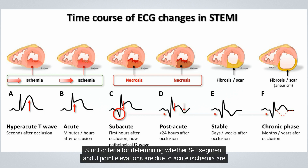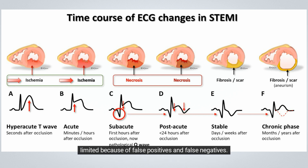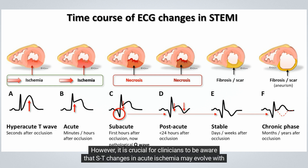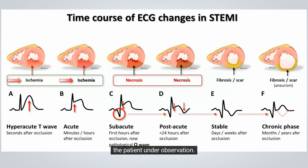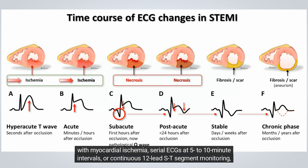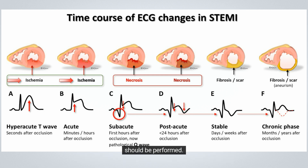Strict criteria for determining whether ST-segment and J-point elevations are due to acute ischemia are limited because of false positives and false negatives. However, it is crucial for clinicians to be aware that ST changes in acute ischemia may evolve with the patient under observation. If the initial ECG is not diagnostic of STEMI but the patient continues to have symptoms consistent with myocardial ischemia, serial ECGs at 5 to 10-minute intervals or continuous 12-lead ST-segment monitoring should be performed.